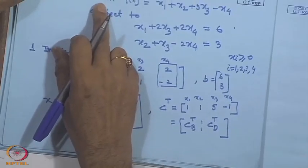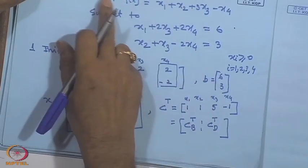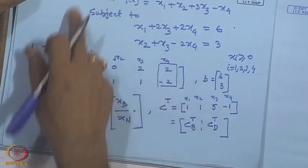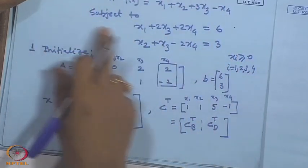Last class we discussed how to solve a standard LP (linear programming) problem using the algebraic approach, and we considered a numerical example which we could not complete. So we recap the example here. Our problem is: given the function which we have to minimize, subject to the constraints which are in standard LP form.